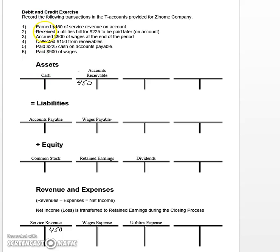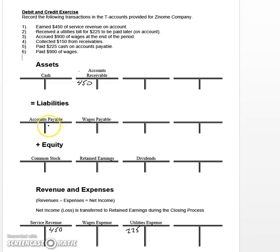Number two says we received a utilities bill for $225 to be paid later, or on account. We got a utilities bill in the mail and we're planning to pay it in a couple of weeks. But remember, accrual-based accounting says we have to record all expenses when they're incurred, and it sure looks like we've incurred these utility expenses. So we're going to increase the utilities expense account on the debit left side by $225. We can't credit cash yet because we haven't paid for it, so instead we're going to increase our accounts payable account by $225. Accounts payable is a liability, and liabilities increase on the credit right side.